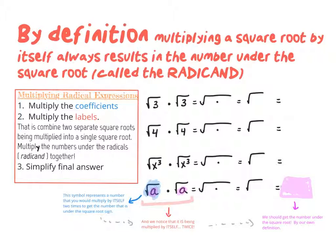In the last example we saw an important definition of square roots: the square root of 3 times the square root of 3. We join them together and multiply the radicands — 3 times 3 is 9 — and the square root of 9 is just 3. So as a pattern, if we multiply a square root by itself, we always get the original radicand. For example, √4 times √4 joins to √16, which is just 4 — the original number.